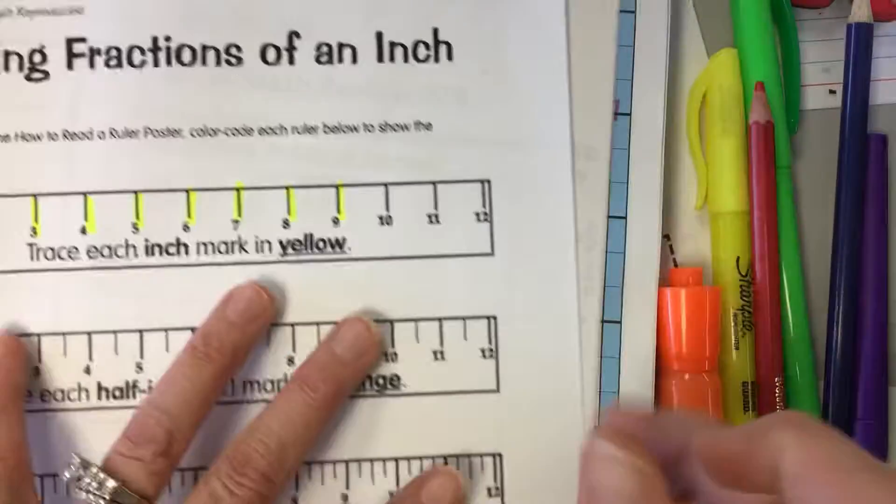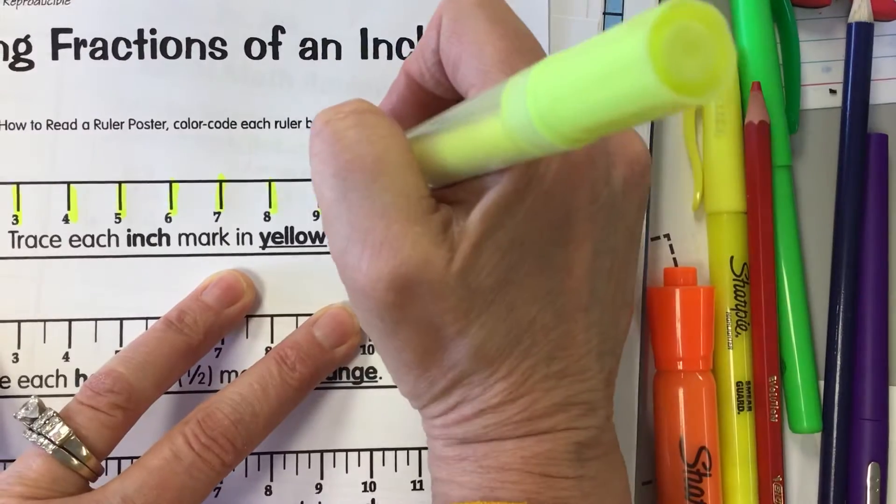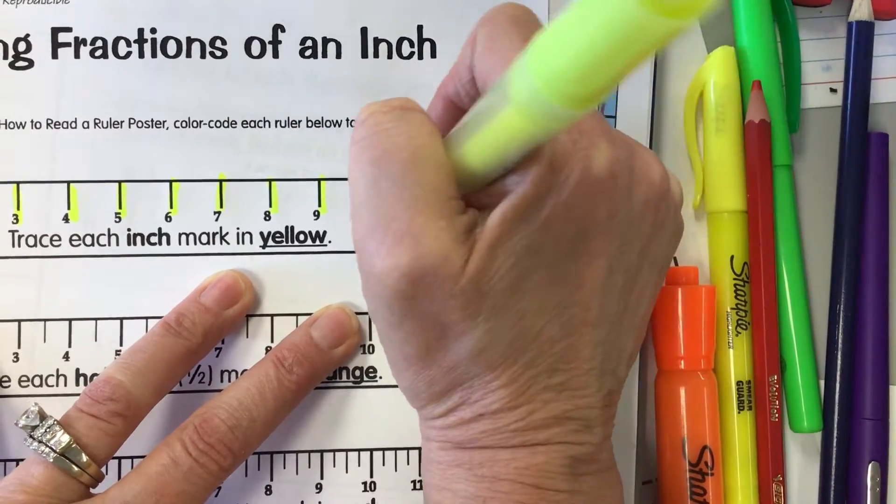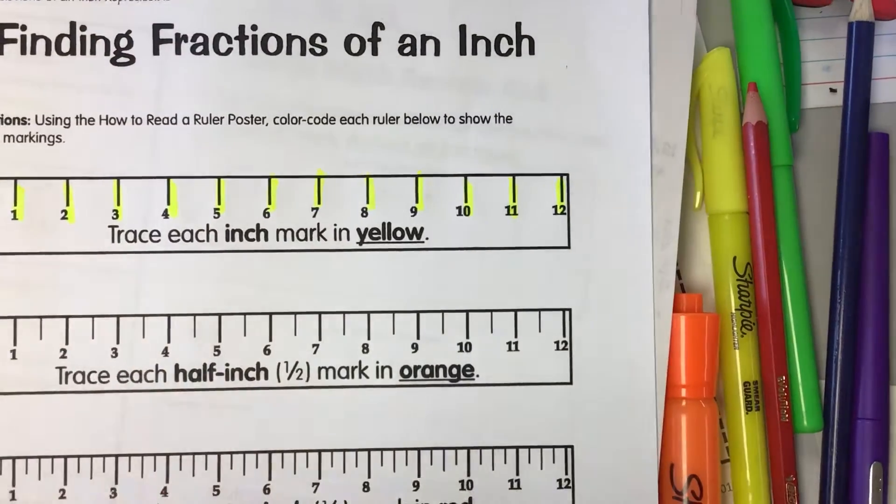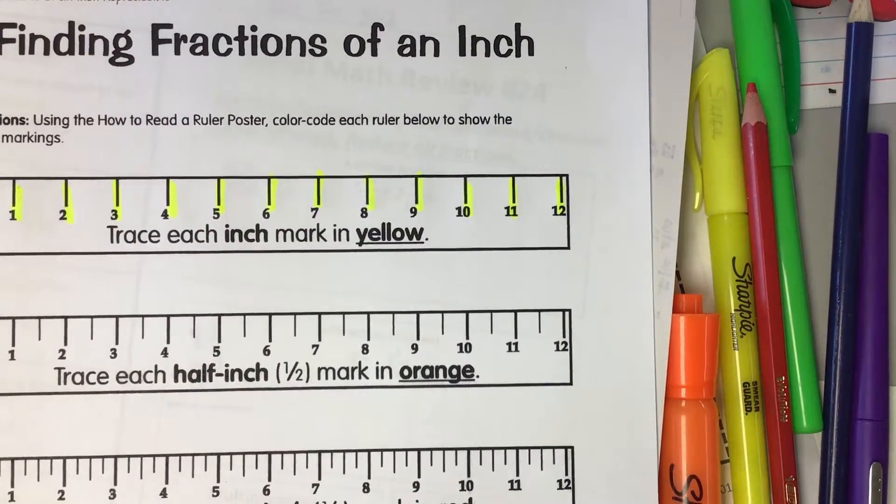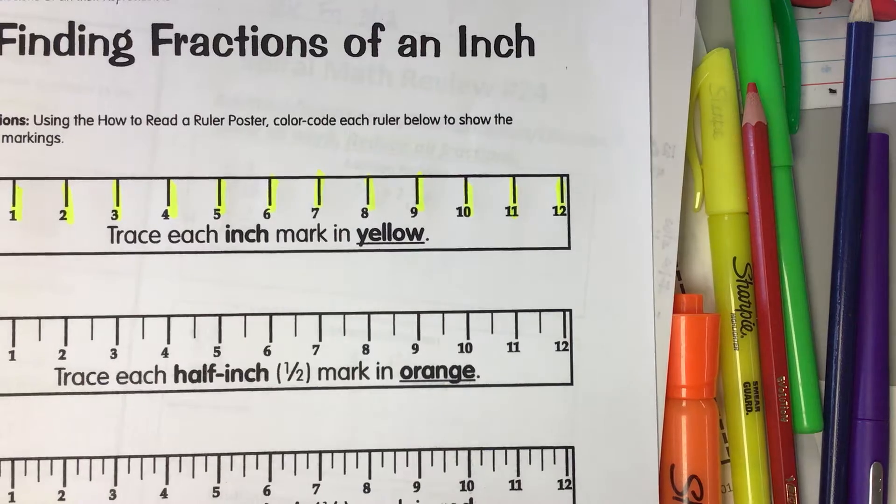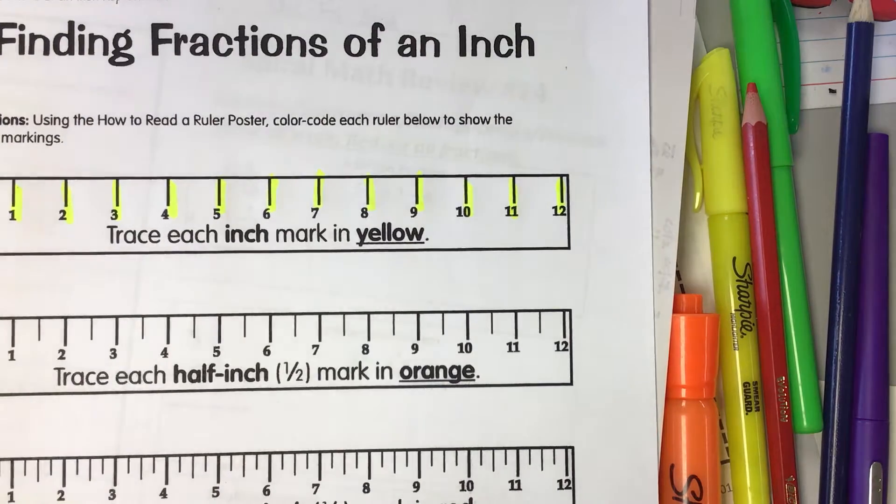Okay, and on a standard ruler there are twelve inches. Who knows why they put twelve inches on a ruler? Why are there twelve inches on a ruler, Harper? Right, because that makes one foot and the standard ruler is a foot long.